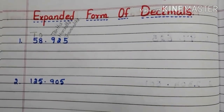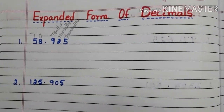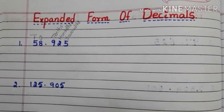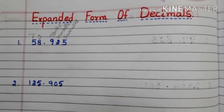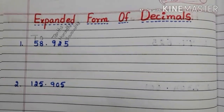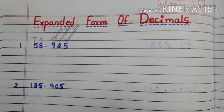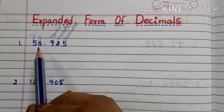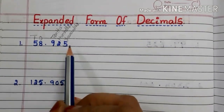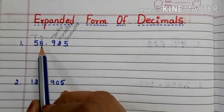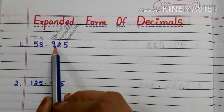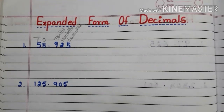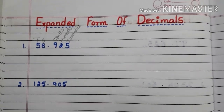Hi all, welcome back to my channel. In this video we will have a look at the expanded form of decimals. So let's get started. Here we have the decimal number 58.925. First let us see the places of digits in the decimal number.